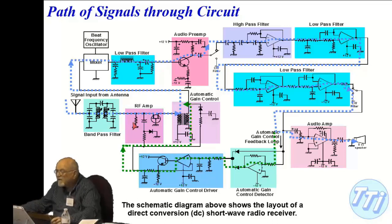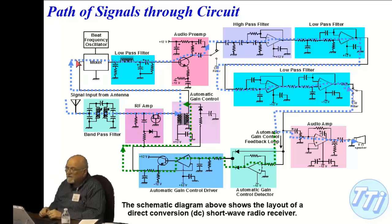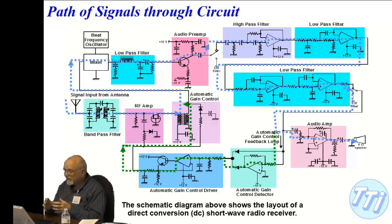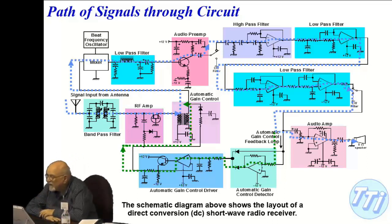Right here, what happens is it transfers over to effectively this point here, and it goes in through what we call a mixer. Now what happens is you have what they call a beat frequency oscillator, which is one that you combine with your RF signal. When you put two signals together, you have the original two signals, the sum of the two, and the difference of the two. And the lower frequency is the difference.